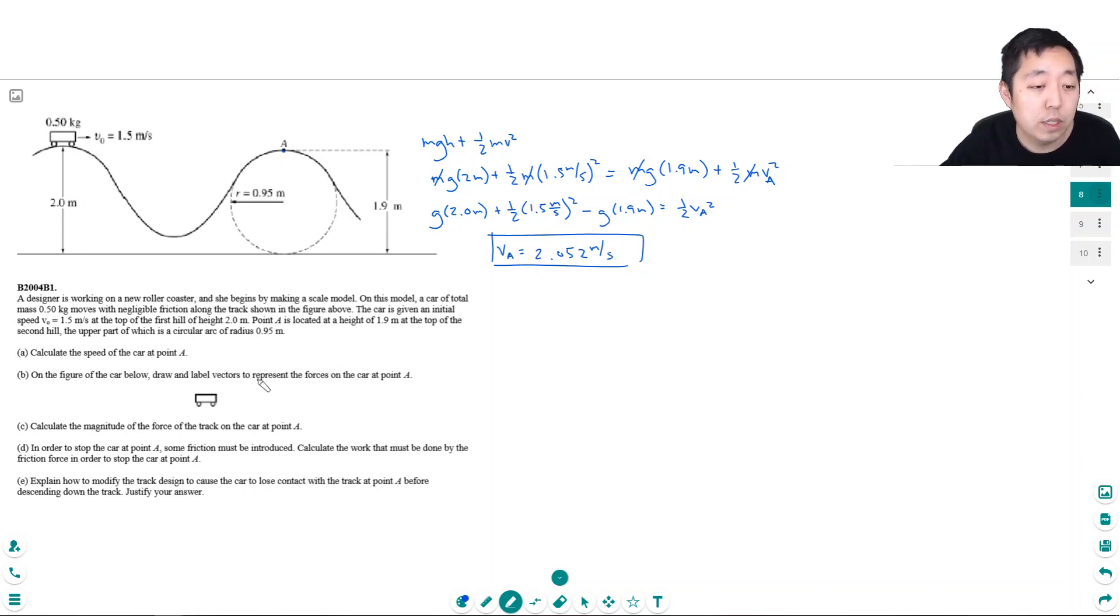On the figure below, draw and label the vectors representing the forces on the car at point A. At point A it's got force of gravity pulling it down and the ground is doing a normal force.